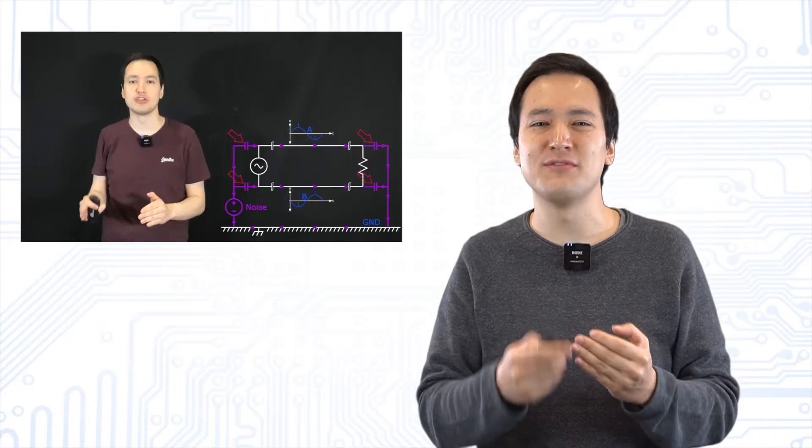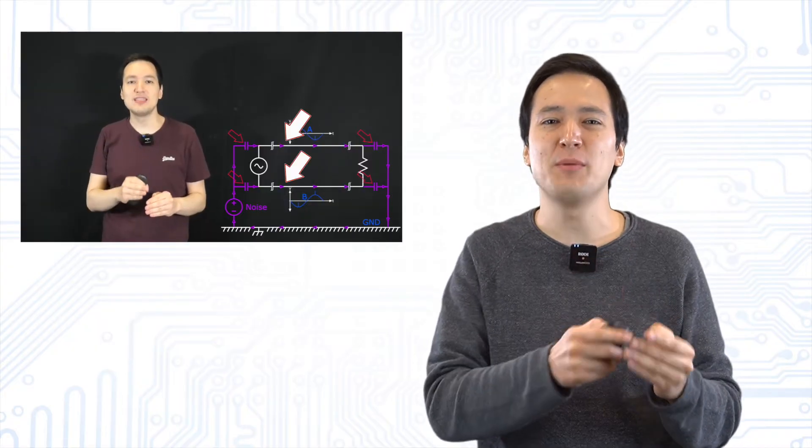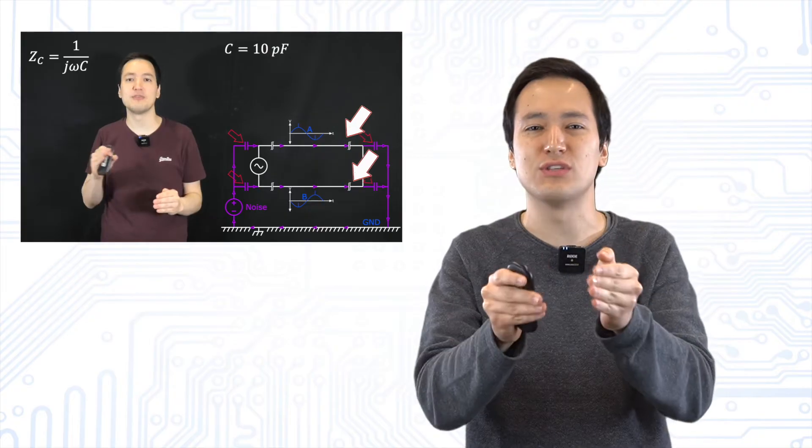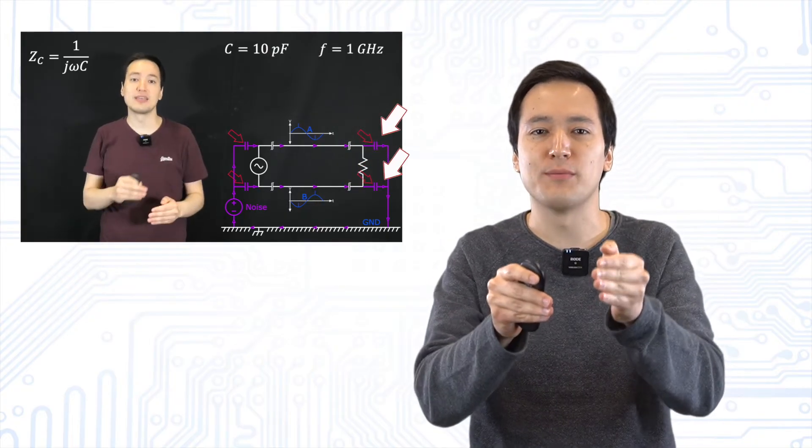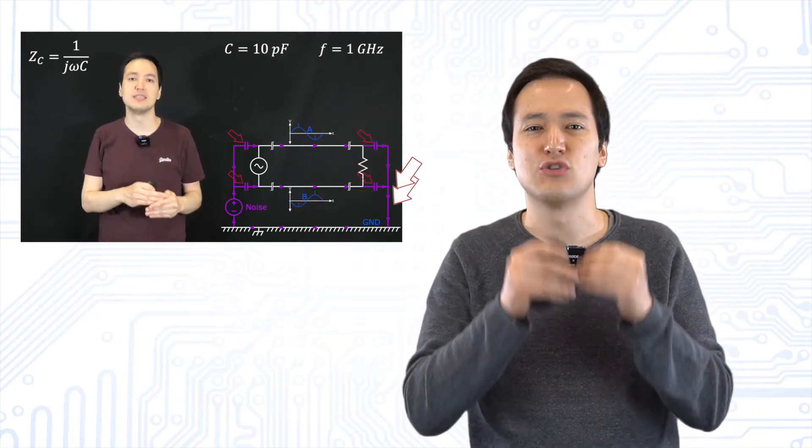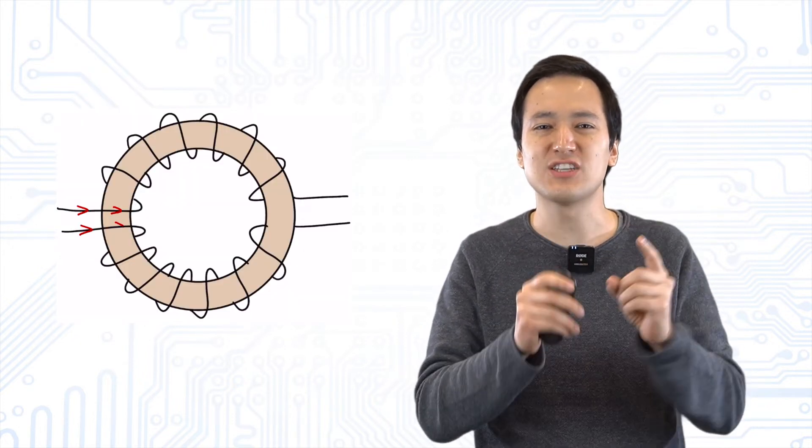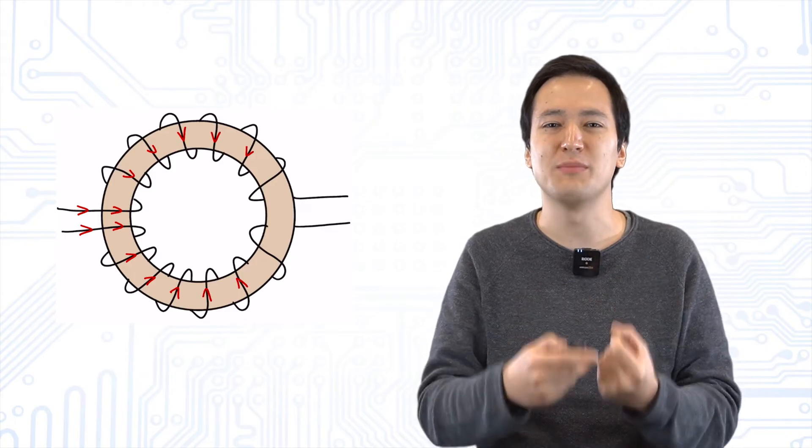In one of our previous videos you saw that common mode currents flow in the same direction into our device and return through the parasitic stray capacitances to our chassis. Therefore, let's consider what happens when we send this common mode current through a common mode choke.